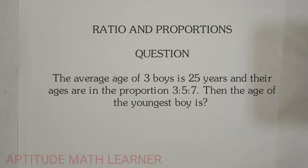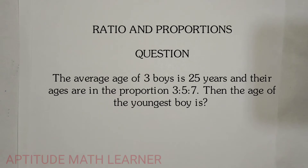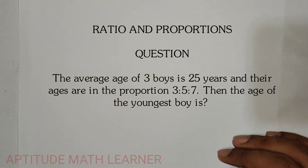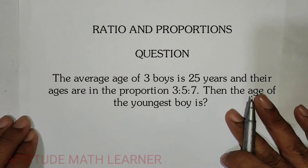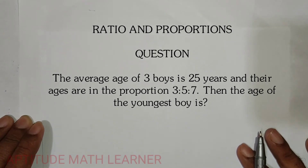Hello and hi to our channel Aptitude Math Learner. Today we have another interesting question: the average age of three boys is 25 years and their ages are in the proportion 3:5:7. We have to find the age of the youngest boy. Let's begin with the solution.